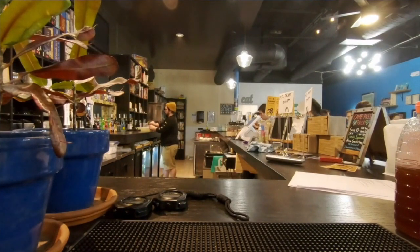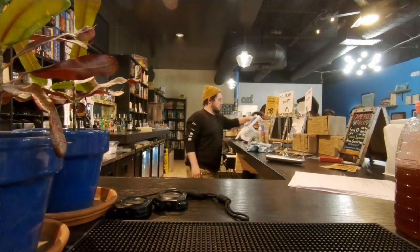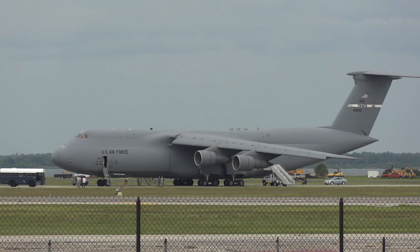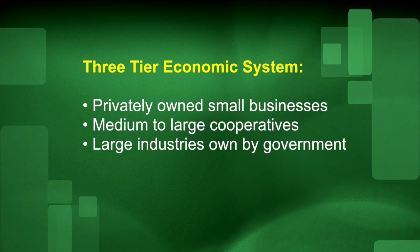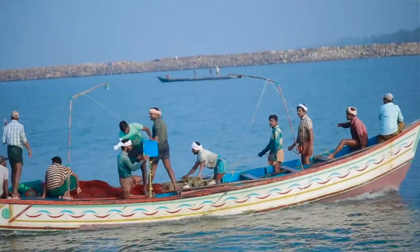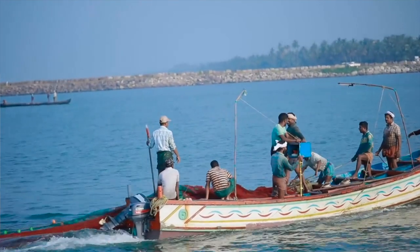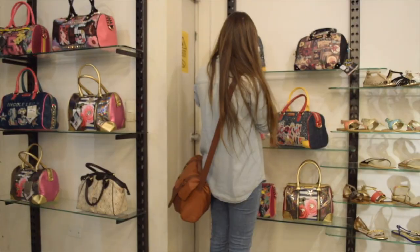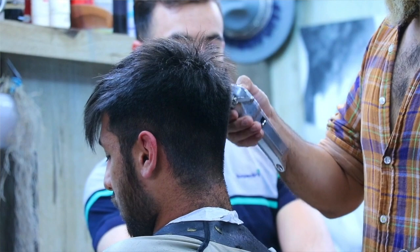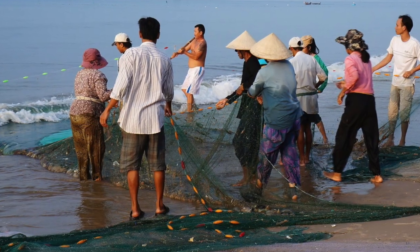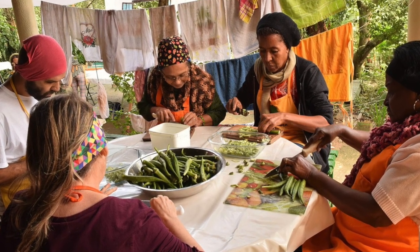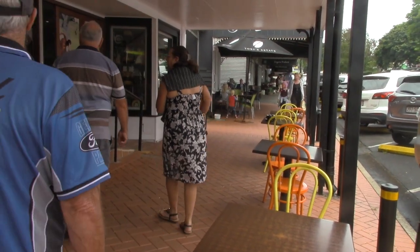Prout divides the industrial system into three categories: privately owned small businesses; medium to large scale businesses which are run by cooperatives; and very large industries, which are concerned with key functions of the economy and are owned and run by the most local government possible. Examples of small scale industries are businesses employing only a handful of people, such as family businesses or cottage industries. Often they are concerned with luxury goods and services such as jewelry shops, restaurants, small IT businesses, and hairdressers. If the business grows beyond a certain number of employees, predetermined by the community, then it will either stop growing or turn itself into a cooperative. This is to prevent monopolization or exploitation by a dominant business.